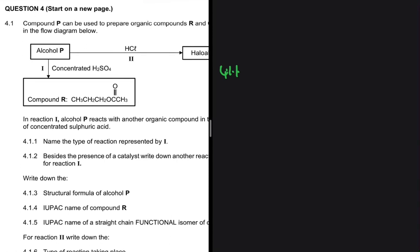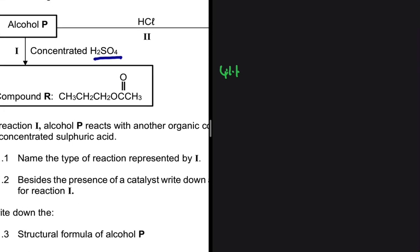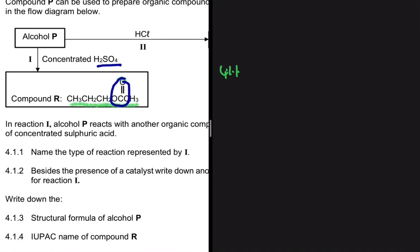Let's do some analysis. We have an alcohol, and in reaction 1 we have concentrated H₂SO₄ as a catalyst. Our product is CH₃CH₂CH₂ bonded to a carbon double-bonded to an oxygen, and CH₃. We can see from this part of the compound that we have an ester. So that makes reaction 1 a sterification — an esterification — because our product is an ester.